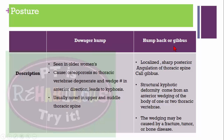Dowager's posture is noticed mainly in older women. The most common cause is osteoporosis — the thoracic vertebrae degenerate and wedge fractures occur in the anterior direction, leading to kyphosis, usually in the upper and middle thoracic spine. Gibbus or humpback posture is a sharp posterior angulation of the thoracic spine — a structural kyphotic deformity caused by anterior wedging of one or two thoracic vertebrae due to fracture, tumor, or bone disease.